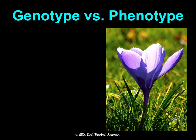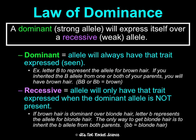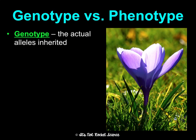Going back to our example: BB, Bb, and bb are genotypes — they show the actual genes inherited. Brown and blonde are phenotypes — they describe the physical traits being expressed.